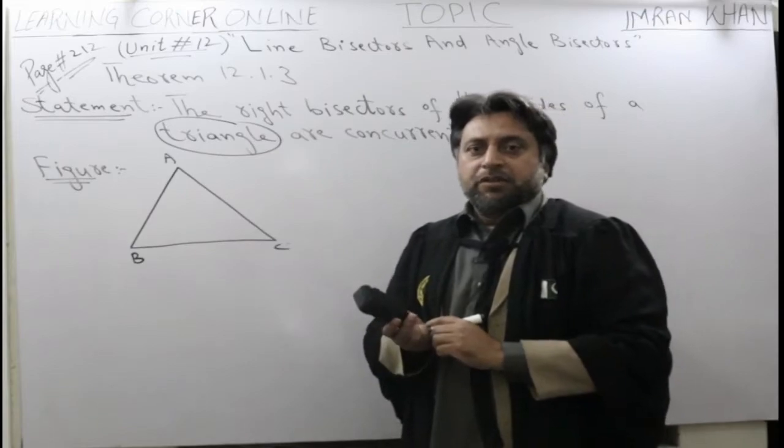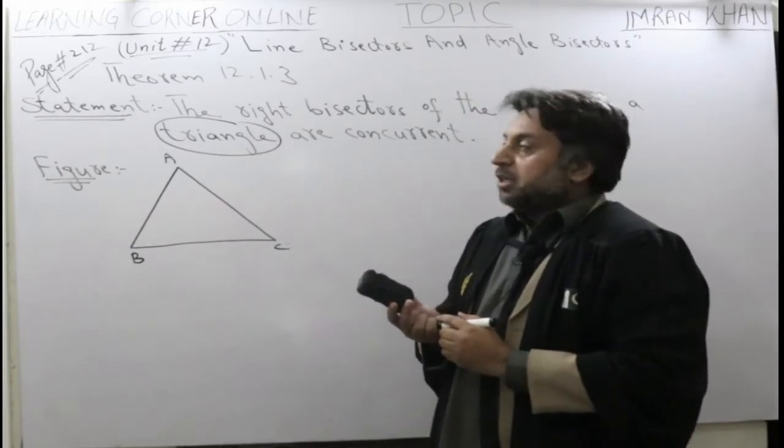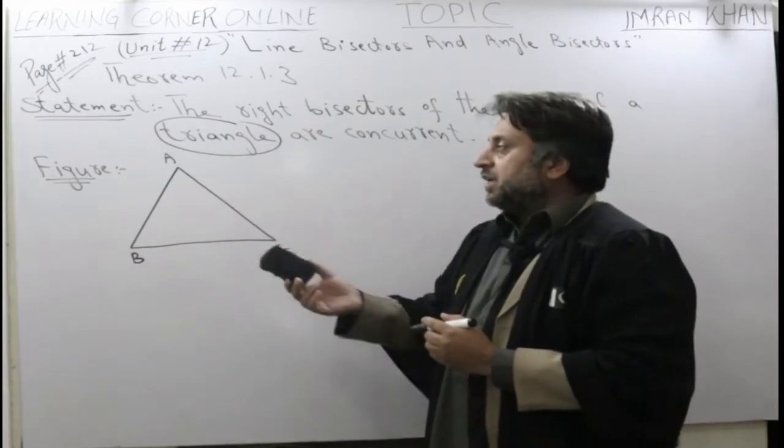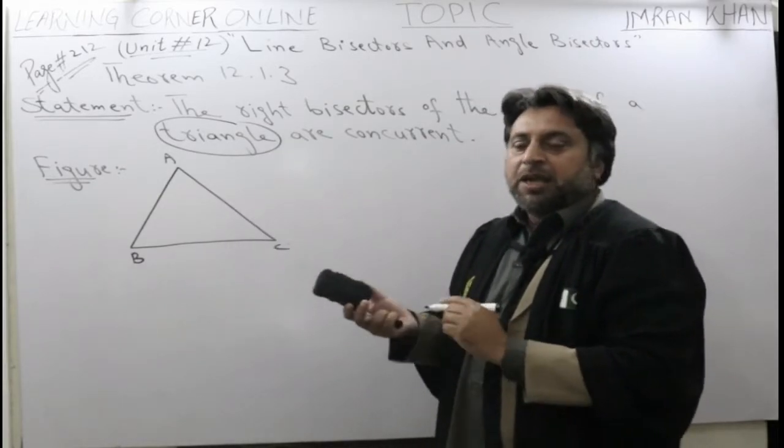Our third element is what? Given. In this statement, the given is what? Figure. That figure is what? A triangle. A triangle ABC.